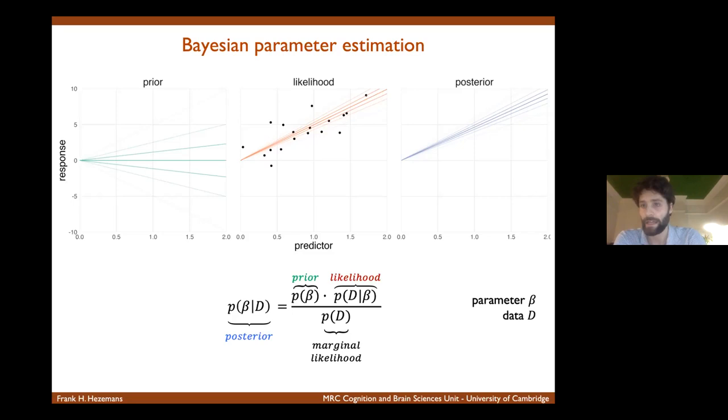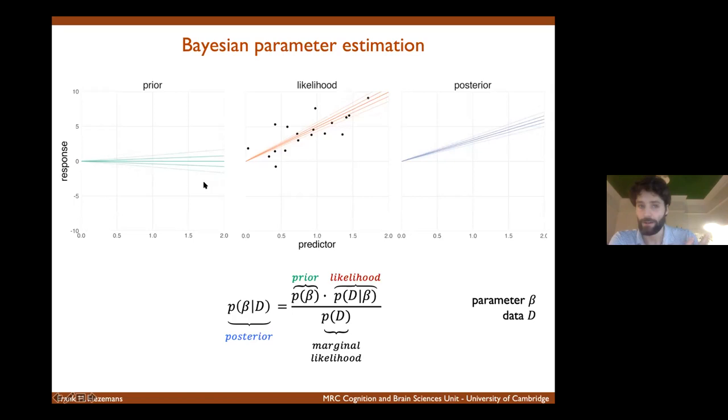And of course, the posterior distribution is sensitive to your prior because if we pick a much more narrow prior distribution, reflecting our belief that there isn't much of a relationship, you can tell that this posterior is kind of shrunk in the direction of the prior. Now this example is just one coefficient, but implicitly we also have a model term here.